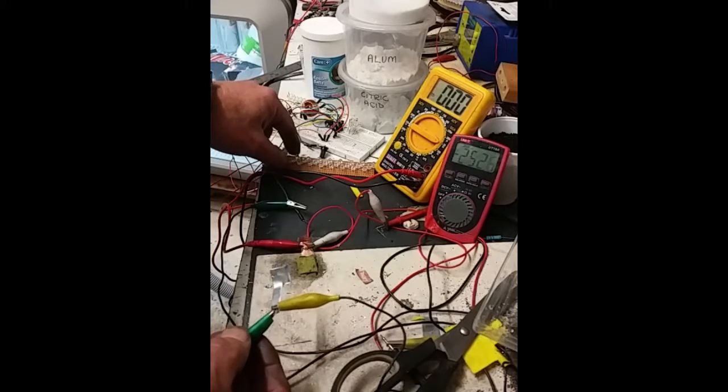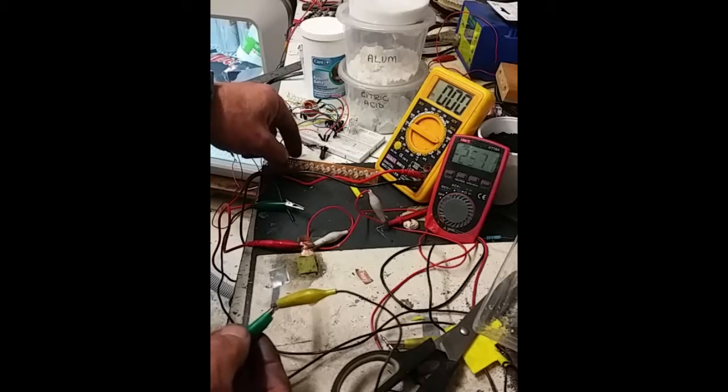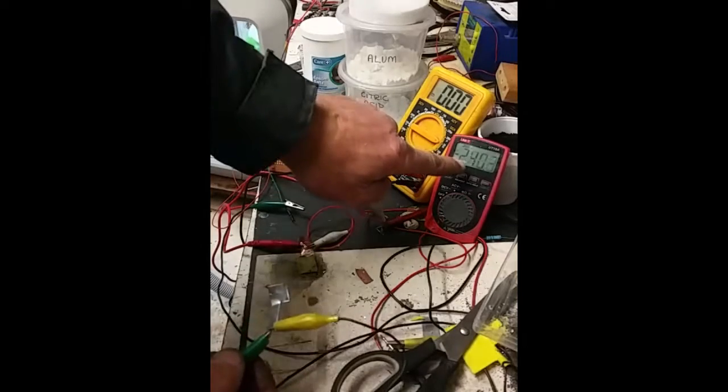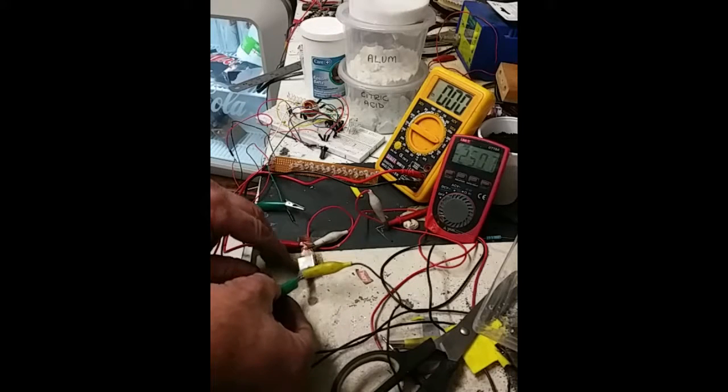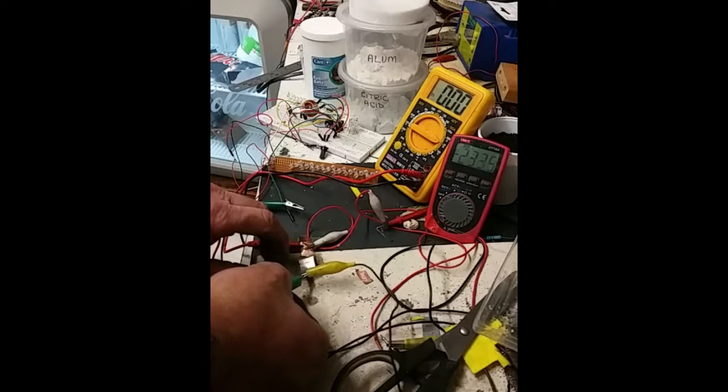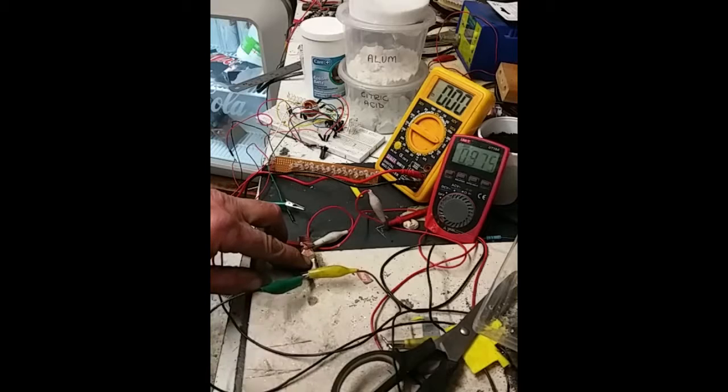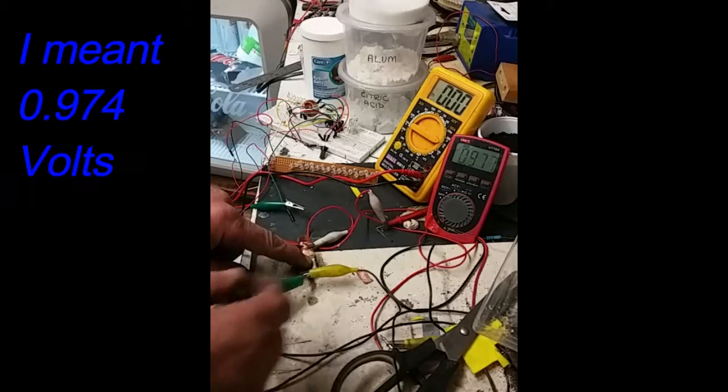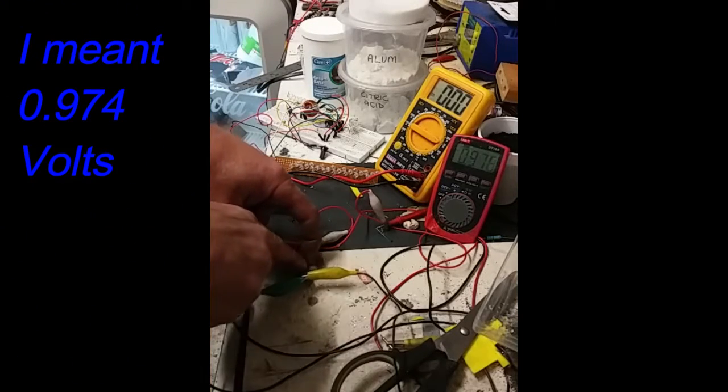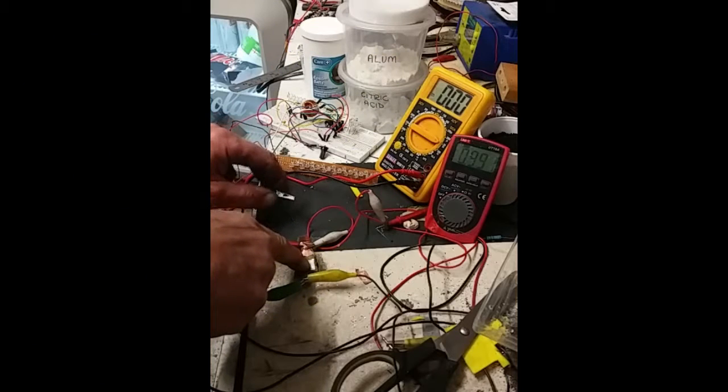There's my trusty little joule thief with the 12 LEDs, there's your voltage meter and current. Okay, so if we just connect it up, the voltage is 0.9, 0.8, it's going down a bit. But if I just hold that there and connect up the joule thief...